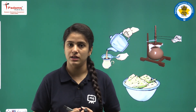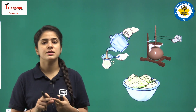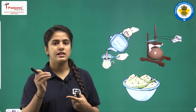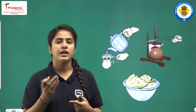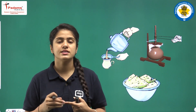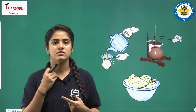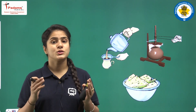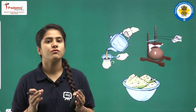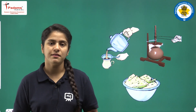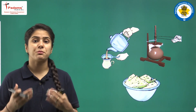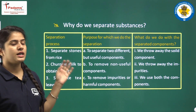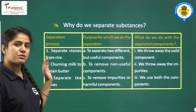If we don't separate substances, it can be harmful. For example, if I have not separated the stones from rice and I boil the rice, then when eating I'll have those impurities in my mouth, which will be harmful. So we separate things for useful purposes. Now let's see why we separate things — here is a table of separating processes.